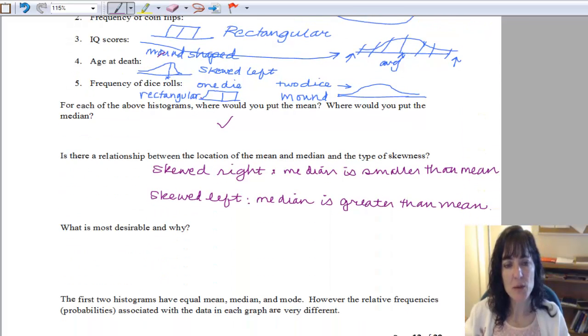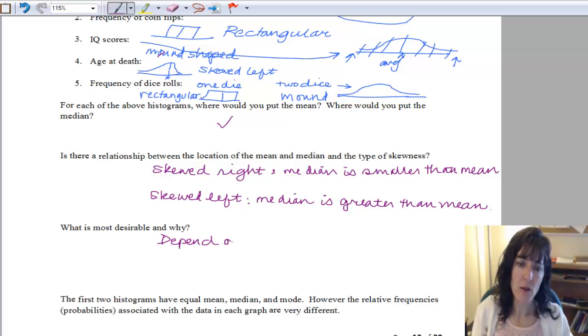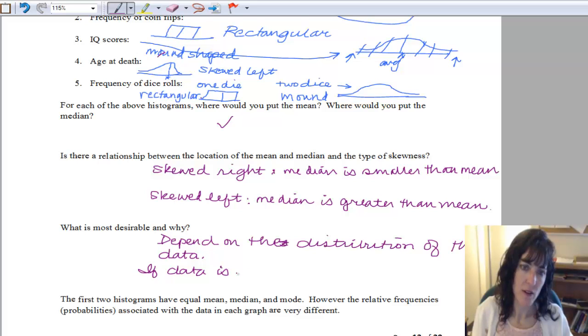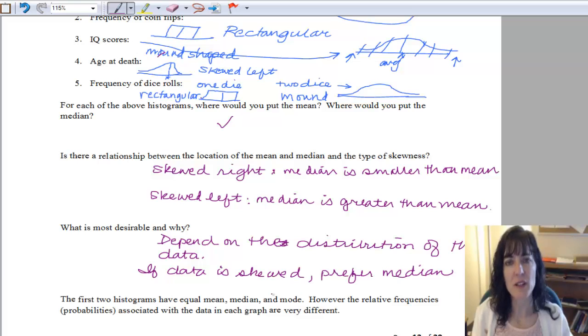Okay, and then we say, which is the most desirable and why? And at this point, you really don't have very much information about it, and it really is going to depend on the distribution of the data. If your data is skewed, we usually prefer the median, because it'll be a little bit better measure of center, it's not being pulled towards that tail as much.